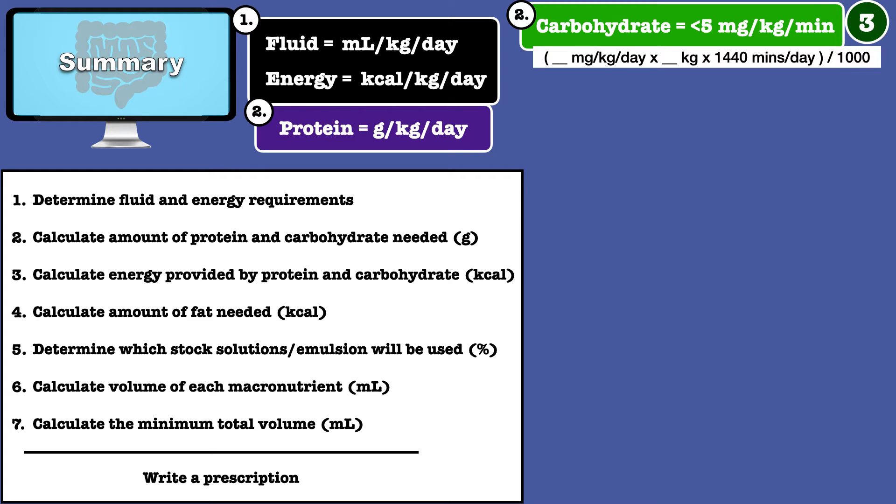A rate of 3 milligrams per kilogram per minute is a good place to start. Once you have the number of grams needed, finding calories from protein is easy. It is the same as calculating calories from food, 4 calories per gram.